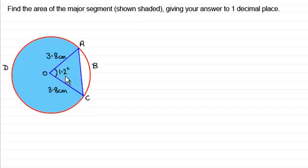So what I've got here is a segment drawn in a circle of radius 3.8 centimeters and the angle subtended at the center of the circle by the chord AC is 1.2 radians. Now to do a question like this there's two ways that spring to mind. I'm going to take the slightly longer method and give you the opportunity of doing a quicker method at the end and you can check your answer against mine.